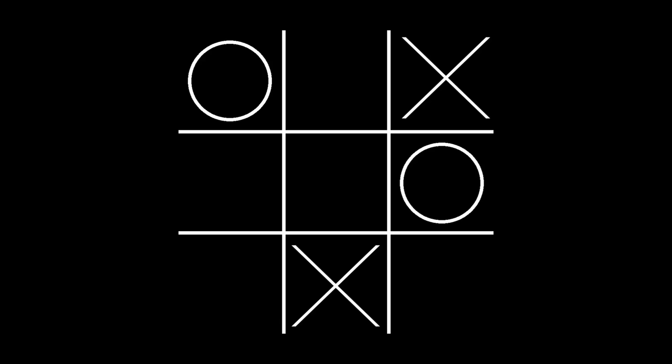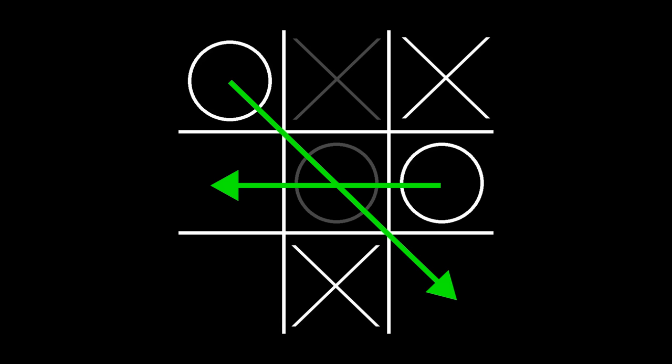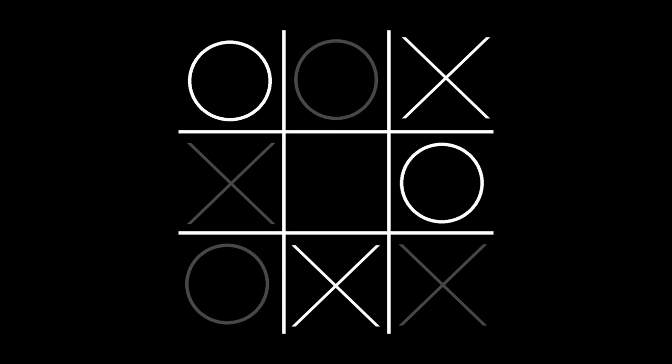For instance, consider this situation where it's X's turn to play. If X goes in the center, they create a fork and win. If they go in the lower left corner, they also create a fork and win. If X goes in the middle top, O will go in the center, create a fork and win. If X goes in either of the remaining spots, a draw is inevitable.